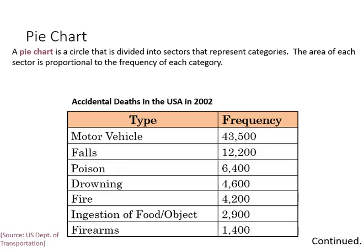Next, we can look at the pie chart, which is a circle divided into different sectors that represent the different classes or categories. The area of each sector is proportional to the frequency of that category. Here we're going to use a different example — accidental deaths in the US from 2002 — and we're going to look at the following categories.